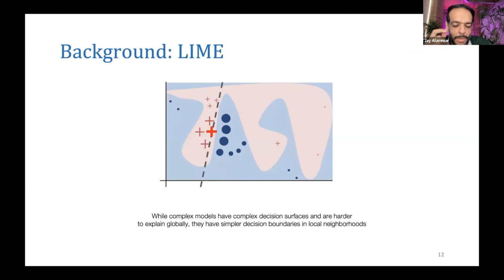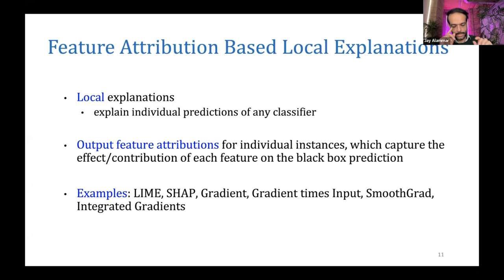Just one point to contrast output feature attribution. Let's say we have text and we're doing sentiment analysis. The explanation that we want is based on just the inputs of the model - which of the inputs in this instance led to that prediction, regardless of whatever else the model knows or stores in its parameters.